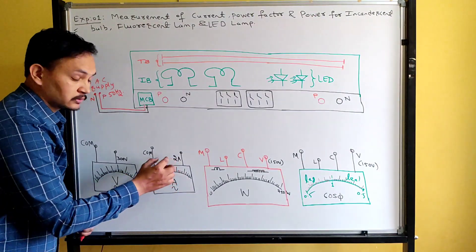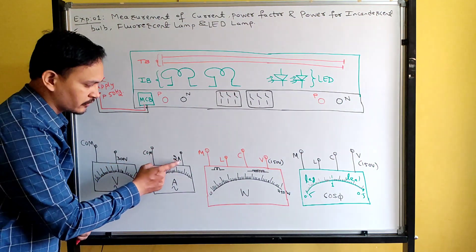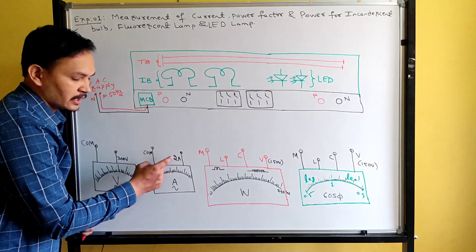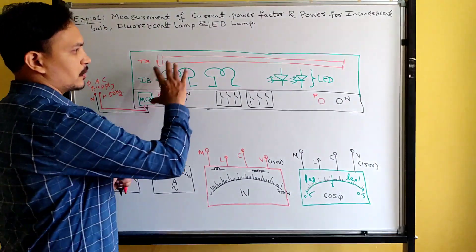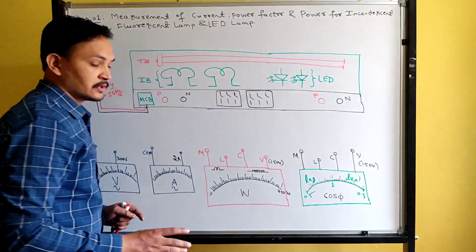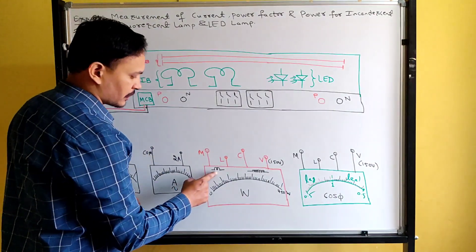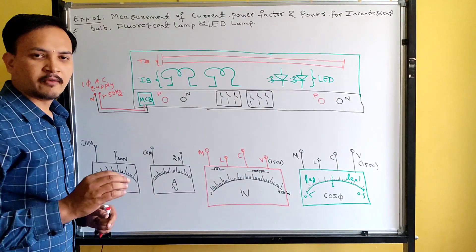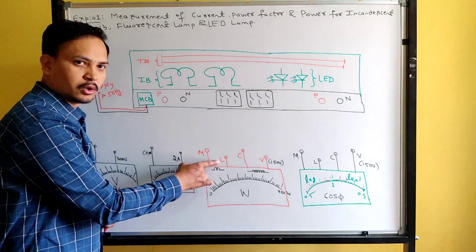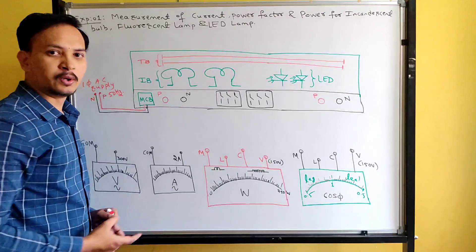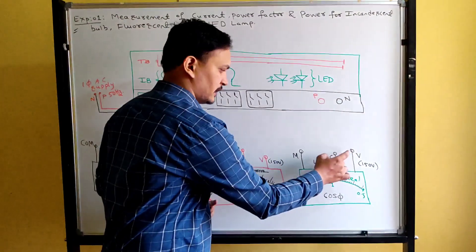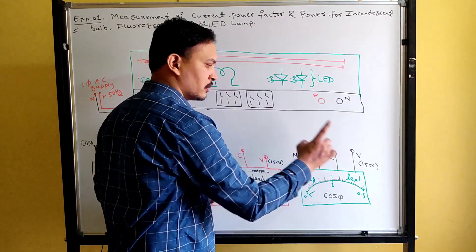The ammeter has three terminals: a common terminal and two current range terminals — one for 1 ampere and one for 2 ampere. Since I have taken a 2 ampere load, use the 2 ampere range. The wattmeter has four terminals: M (mains), L (load), C (common), and V (voltage). Similarly, the power factor meter also has four terminals: M, L, C, and V. The voltmeter has three terminals: a common terminal, a 300 volt terminal, and a 600 volt terminal.